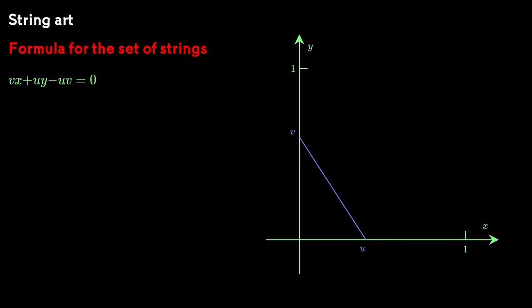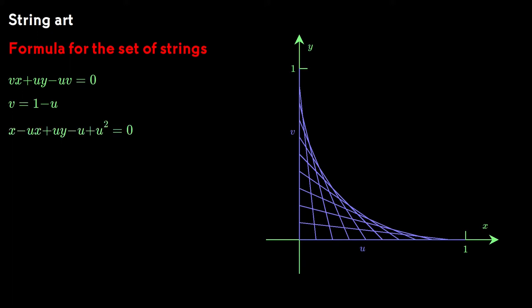Now let's work on the set of strings. How do u and v vary? Let's assume for simplicity that both of them vary from 0 to 1 and that as u goes linearly from 0 to 1, v will fall linearly from 1 to 0. So v is 1 minus u, and we can eliminate v from the formula for the individual lines.